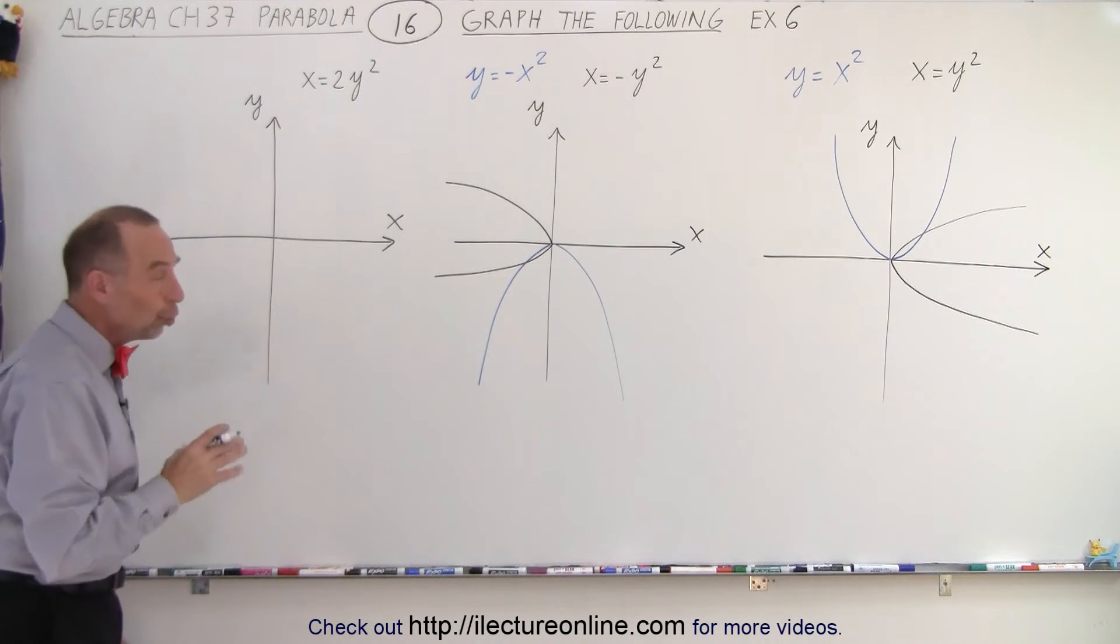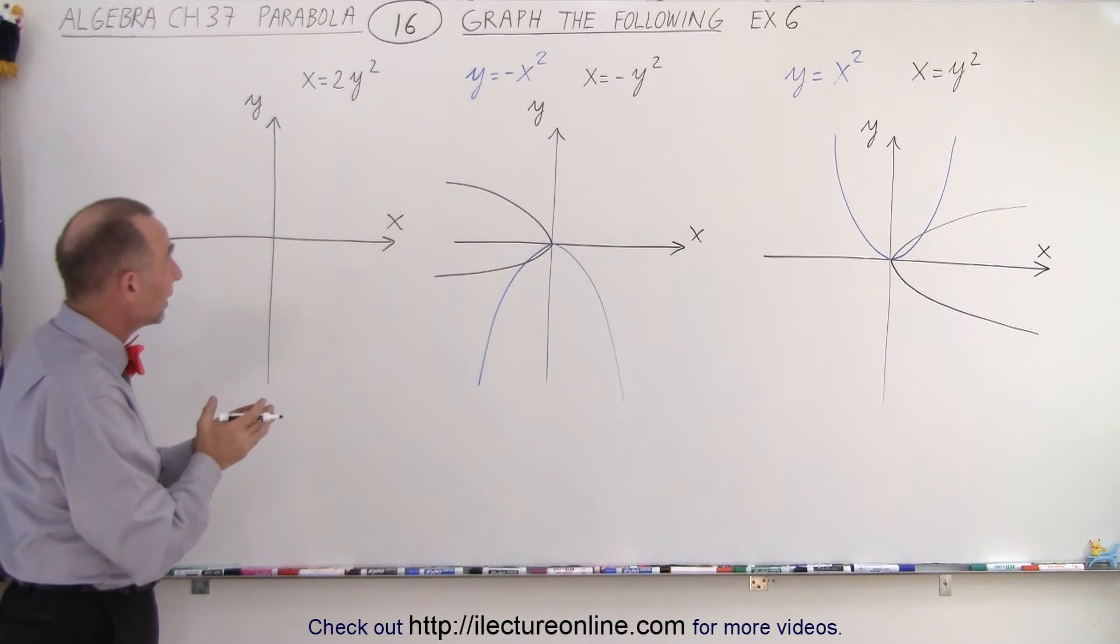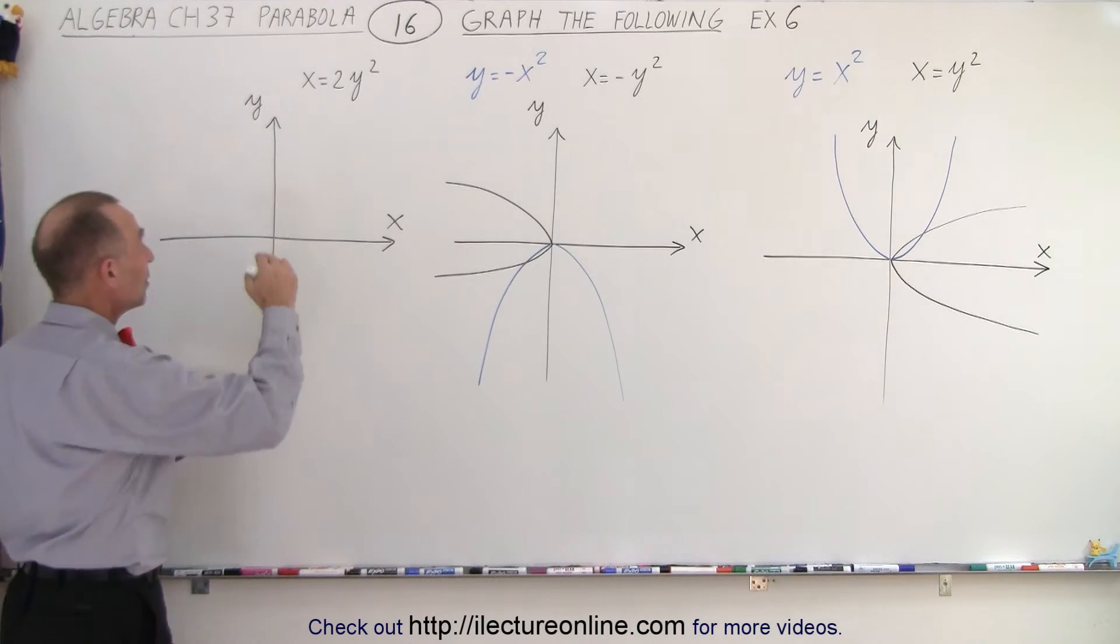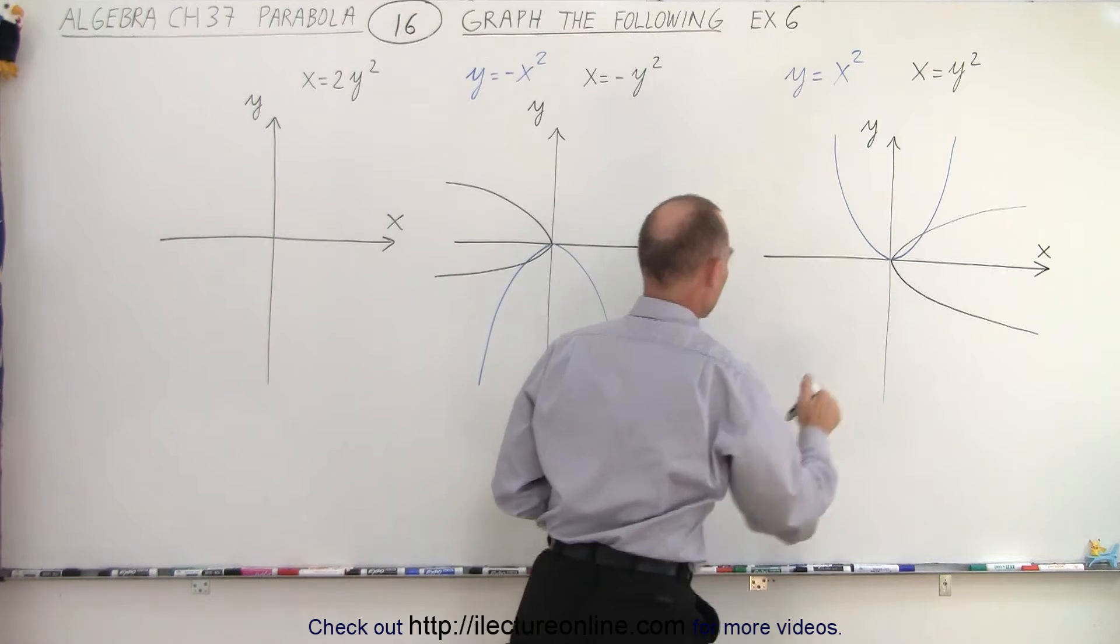And finally, x equals 2y squared. Notice that we'll make x grow much more quickly as we add to y, which means we'll make it a skinnier graph. So instead of making it look like this, it'll look much skinnier.